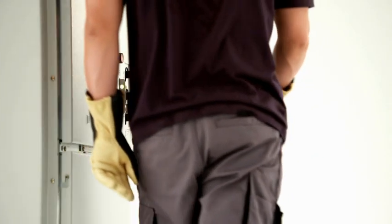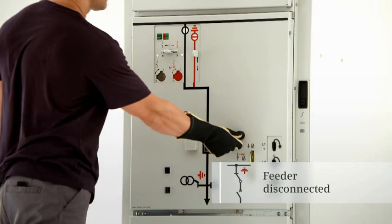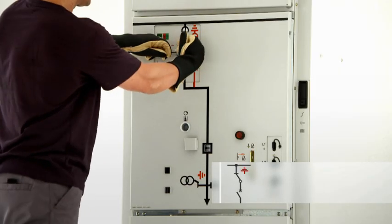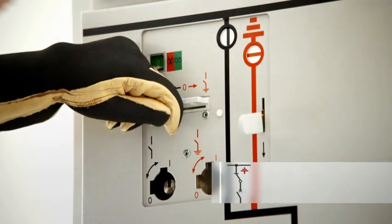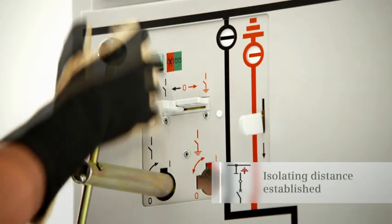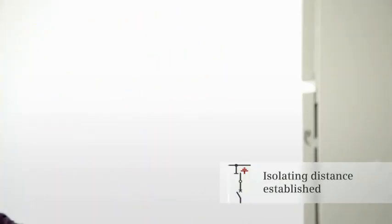To disconnect a feeder from the bus bar and to earth it subsequently, the circuit breaker is first switched to the open position. Only after the interrogation lever has been pushed down and the control gate has been pushed to the left can the three position disconnector be switched to the open position by turning the operating lever counter-clockwise.